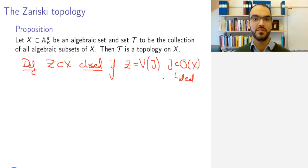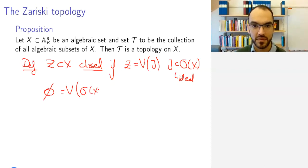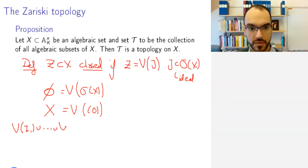Why is this a topology? We have verified the axioms before, so maybe pause and think what the axioms would look like in terms of this condition. We want to prove that the empty set is V of something, and that is V of O(X). We want to prove that the whole set is V of something, and that's of course V of the zero ideal. Then we've seen that if you have a finite number of ideals...